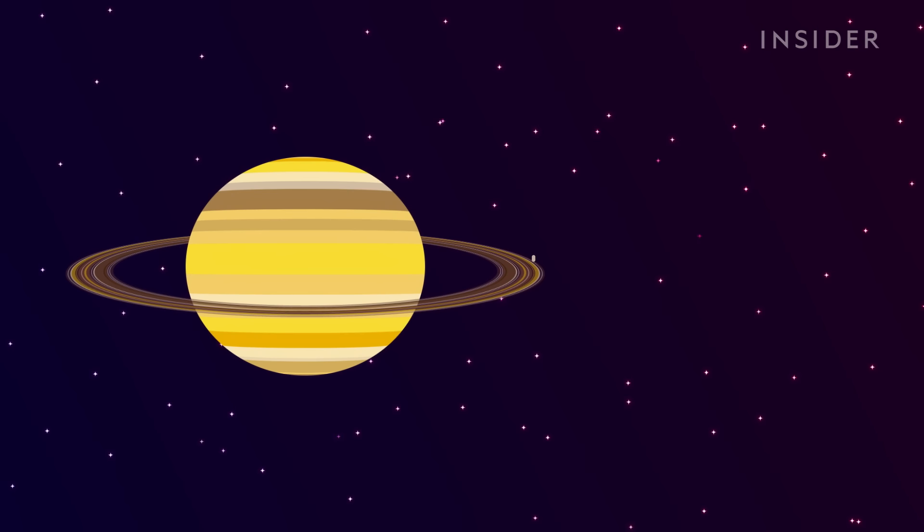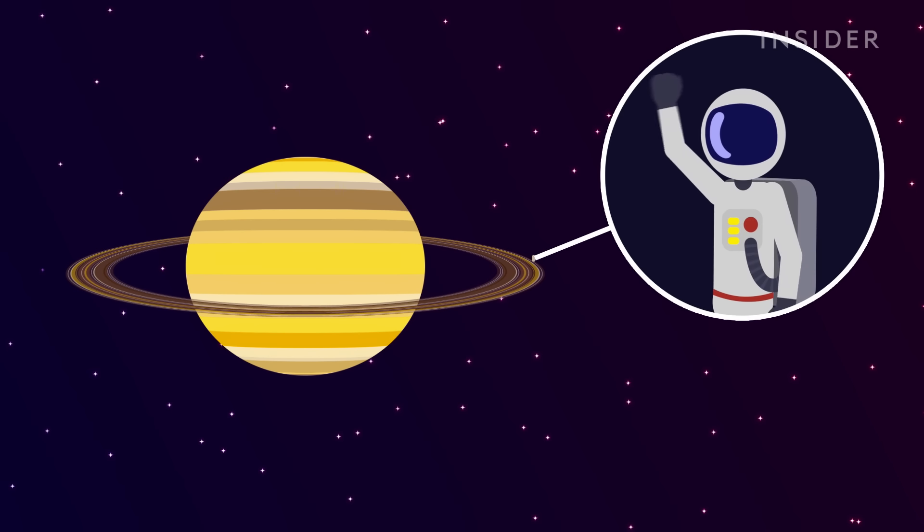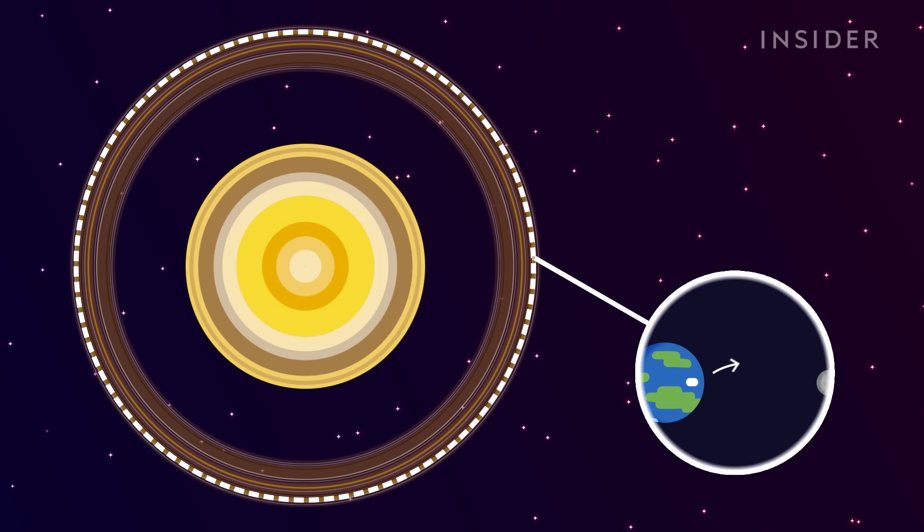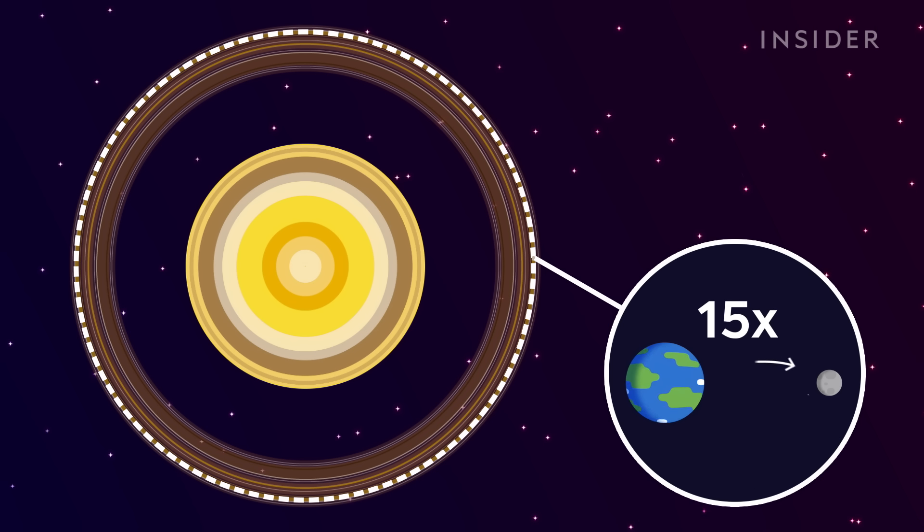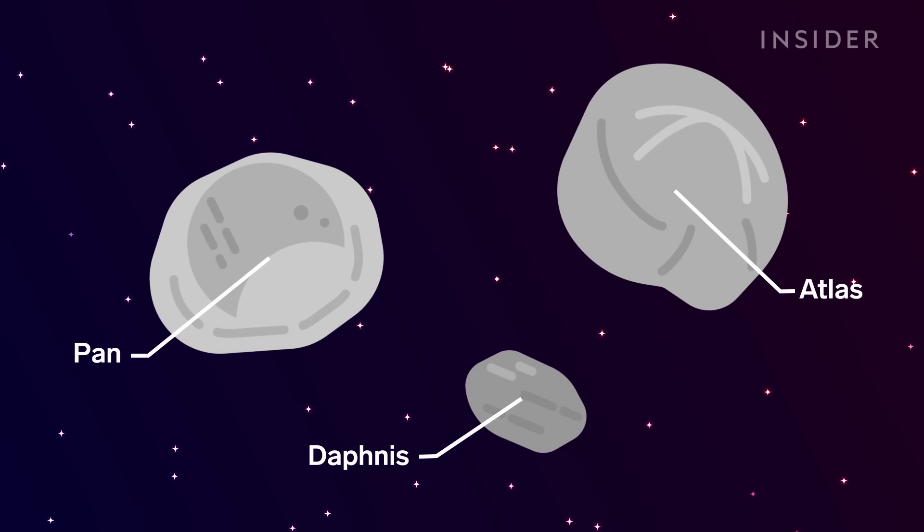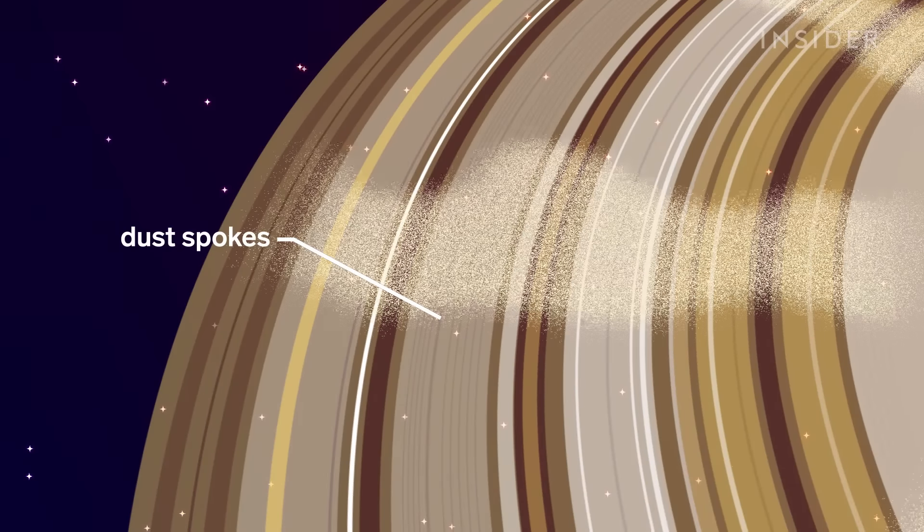But if you were able to hike on one of Saturn's outermost rings, you'll walk about 12 million kilometers to make it around the longest one. That's about 15 round trips from the Earth to the Moon. Along the way, you'll come across tiny moons and spokes of dust levitating above the surface.